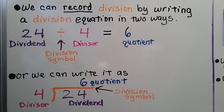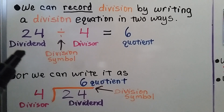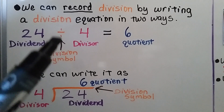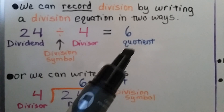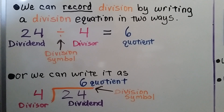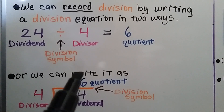We can record division by writing a division equation in two ways. We can write it like a sentence: 24 divided by 4 is equal to 6. This 24 is the dividend - it's the big number. We have our division symbol. This 4 is called the divisor, and it is equal to 6, which is the answer - the quotient. We can also write it with a curved line and a bar as the division symbol, where the dividend is on the inside and the divisor is on the outside.